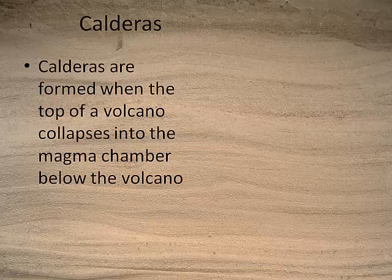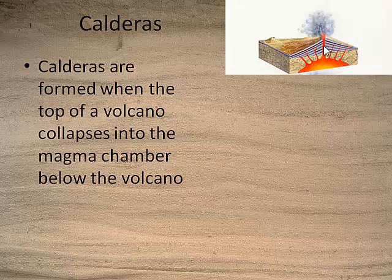Another thing to talk about are calderas, which are altogether different. When we talk about shield volcanoes, composite volcanoes, and cinder cones, we're thinking of volcanic mountains. But a caldera is a depression. What happens is you get a composite volcano with a large magma chamber underneath — filled with liquid rock — and the volcano has been broken by faults and fissures. As the magma chamber fills, it creates tremendous pressure, plus a lot of gas, and eventually there's an eruption that causes the cracks to totally break up the volcano.